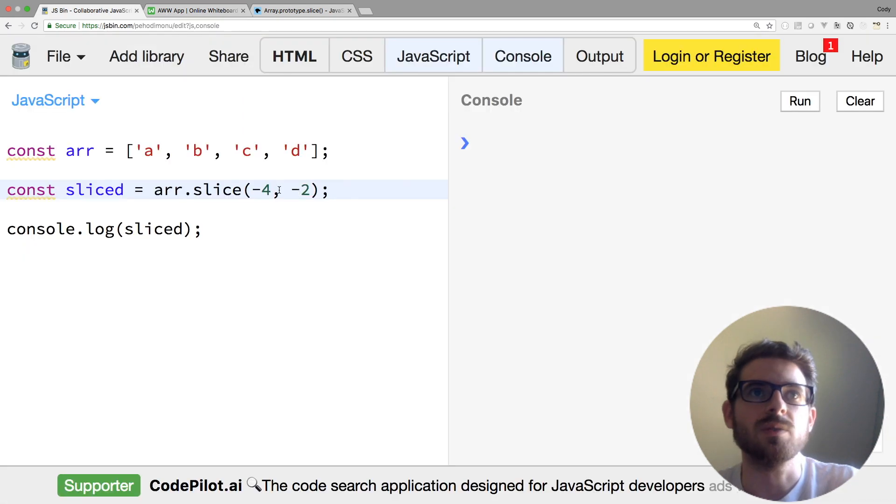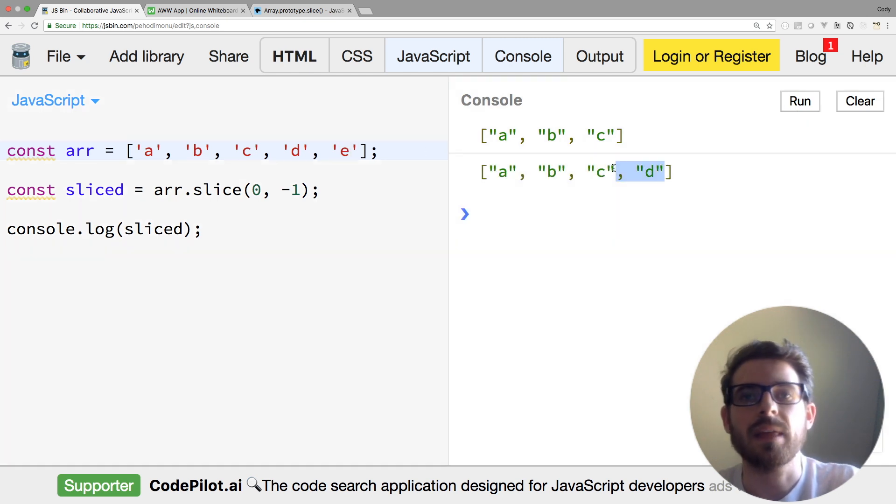Let me draw where we're going here, negative one. And then in JS bin, let's go ahead and do a zero, negative one. So notice that we get ABC back. And if I were to keep on adding elements here, it's going to give us everything except for that last element.